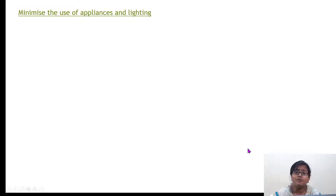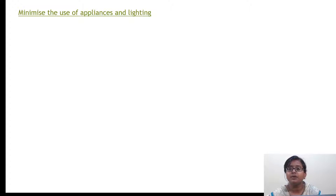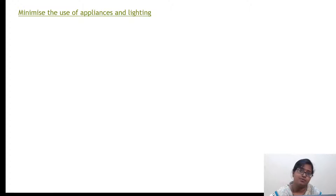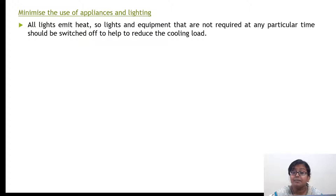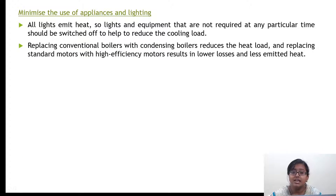Also minimize the use of appliances and lighting, because bulbs, CFLs, fans — everything ultimately liberates heat. Since energy can neither be created nor destroyed but only converted from one form to another, electrical energy is being converted into heat energy. So you must minimize the use of appliances and lighting. All lights emit heat, so lights and equipment that are not required at a particular time should be switched off.